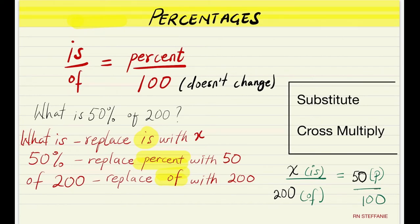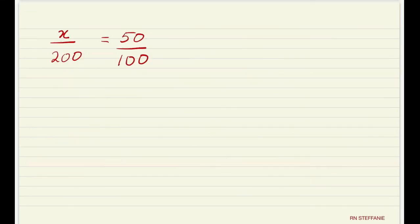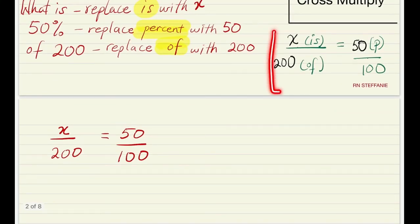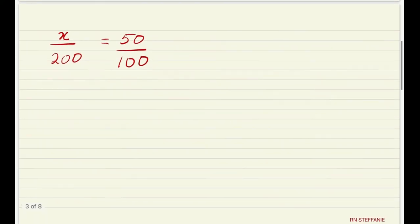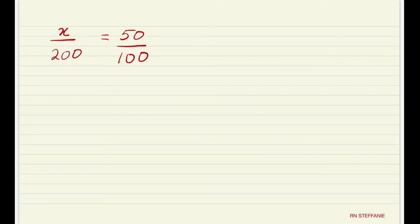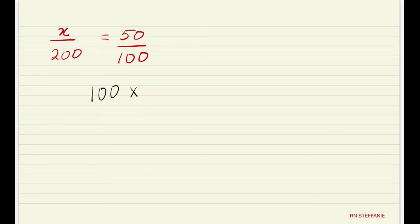Once you know how to substitute the question into the formula, every question you get is going to be super easy for you. I simply rewrote what we had earlier so we could actually solve it. We're trying to find X, so this is a proportion — we're going to cross multiply. It's going to be 100 times X is equal to 50 times 200. 100 times X is 100X, and 50 times 200 is 10,000.